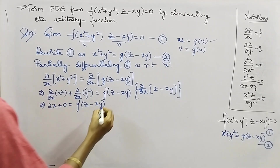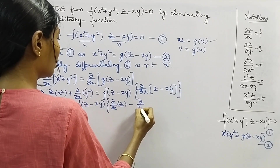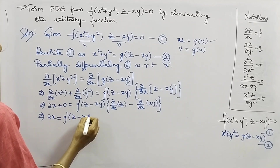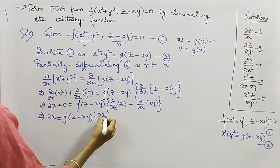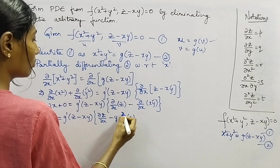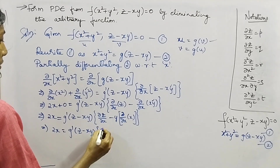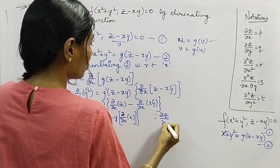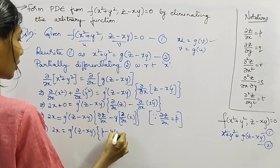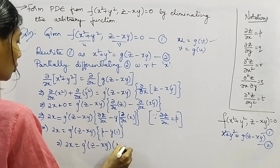This gives us: 2x = g'(z − xy) · (∂z/∂x − y · ∂x/∂x). Since ∂z/∂x = p and ∂x/∂x = 1, we get 2x = g'(z − xy) · (p − y). Consider this as equation number 3.